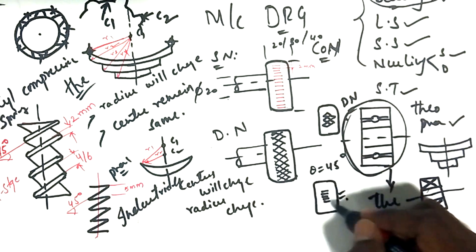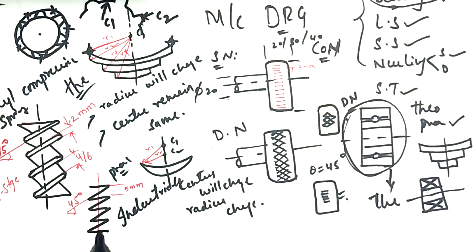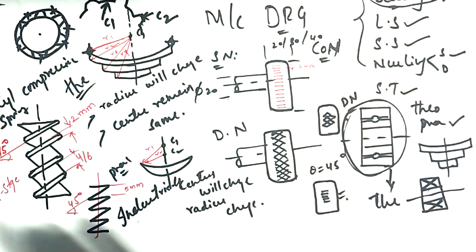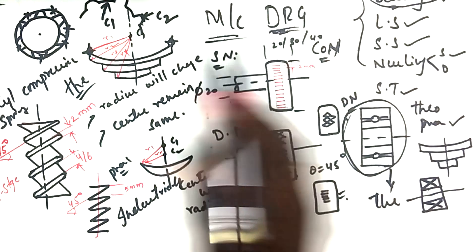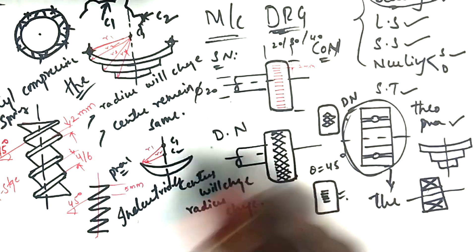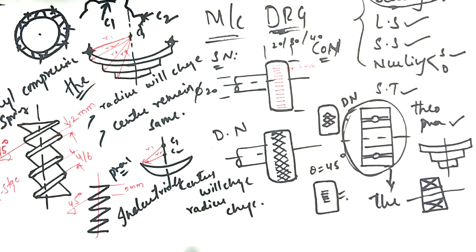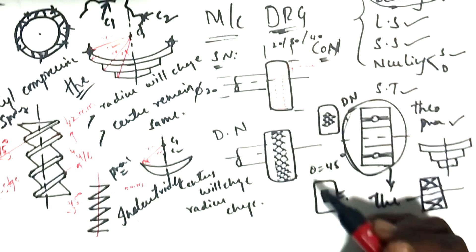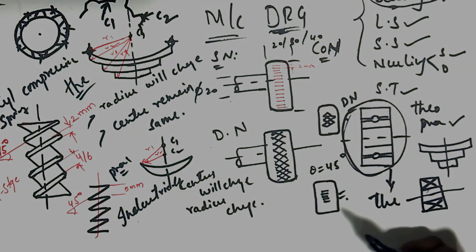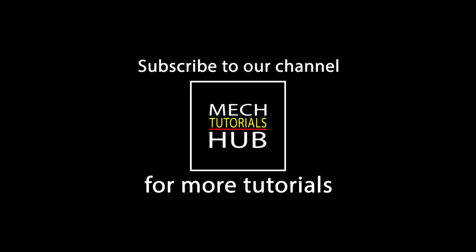This is the representation of diamond knurling, straight knurling, cylindrical compressive spring, and a shaft with splines. Here I am trying to show you how to draw the critical portions of machine components — that is my intention. If you have any doubts or queries, you can mail me. Thank you so much for watching.